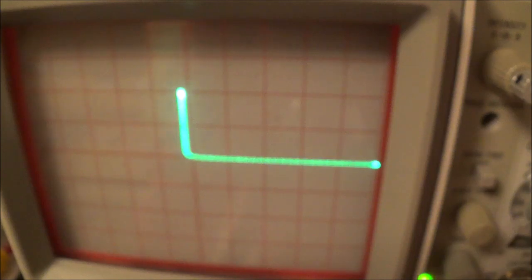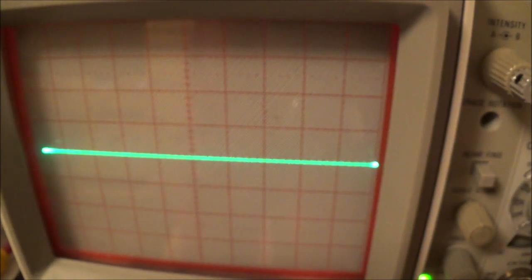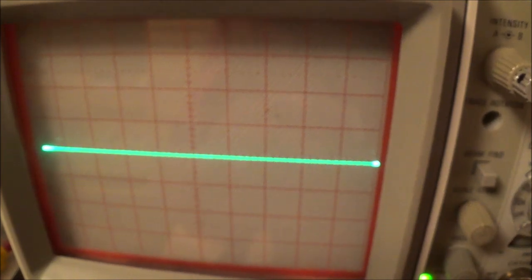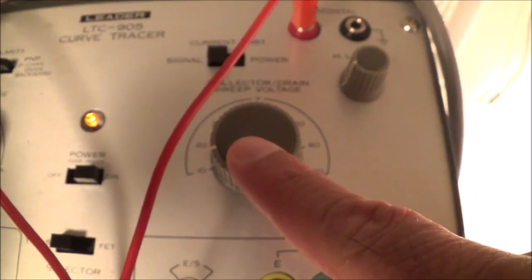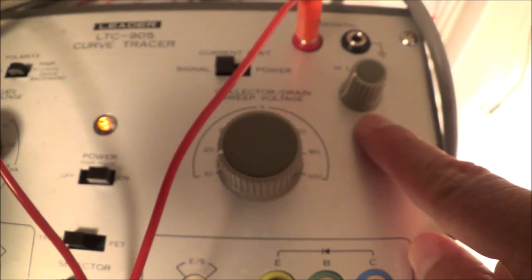If you have one of these curve tracers, let me see if I can get another diode. Now we have an 18 volt zener diode. Before, the collector sweep voltage was 10 volts per division.